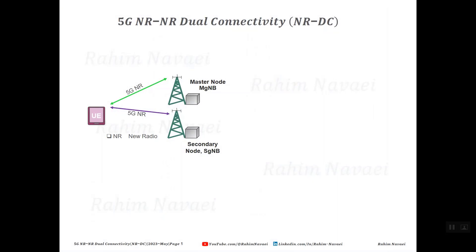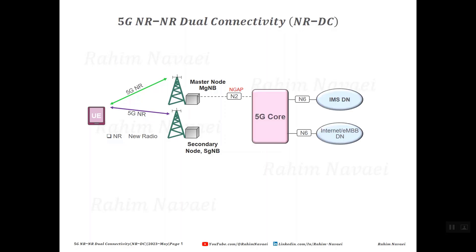NR dual connectivity is a 5G connectivity option where the device is using New Radio only, but with both a master node and a secondary node. In NR dual connectivity configuration, one gNB acts as a master node and the second one acts as a secondary node. From the control plane point of view, the N2 interface from the 5G core is terminated in the master node, and the master node has a control plane connection to the 5G device via RRC connection.